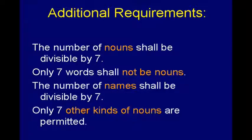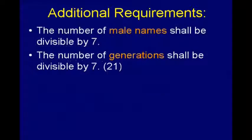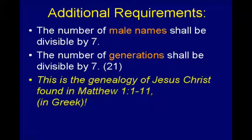I don't think I have any more players, do I? No one wants to try this? I'd like the number of names to be divisible by seven, and only seven other kinds of nouns permitted that are not names. I'd like the number of male names to be divisible by seven, and the number of generations also divisible by seven. And you've probably guessed by now that what I'm talking about is the genealogy of Jesus Christ in the first eleven verses of the Gospel of Matthew in Greek.